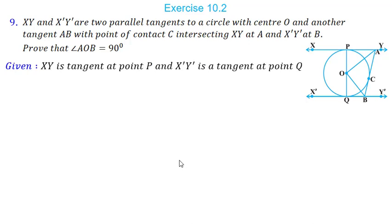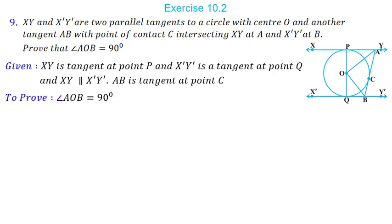Given: XY is a tangent at point P, X'Y' is a tangent at point Q, XY is parallel to X'Y', and AB is a tangent at point C. We have to prove angle AOB = 90°. We join OC and consider triangles APO and ACO, prove them congruent, and get angle POA = angle COA. Similarly, triangles BCO and BQO give angle BOC = angle BOQ. We then add all four angles; since they form a linear pair their sum is 180°, and simplifying gives angle AOB = 90°.